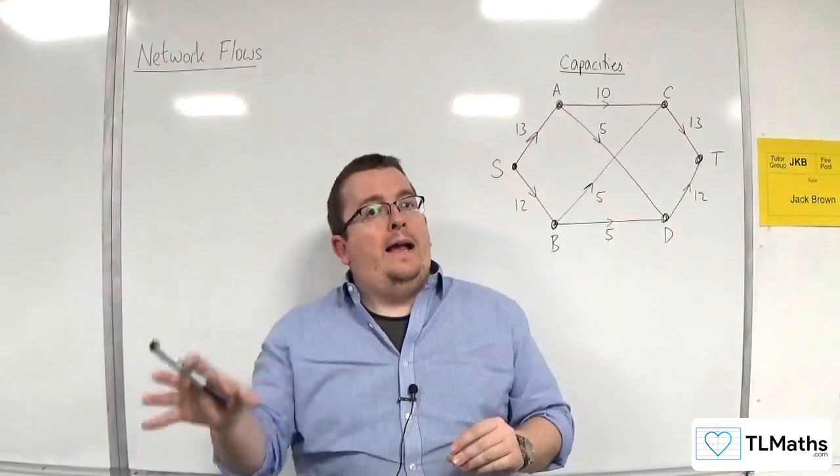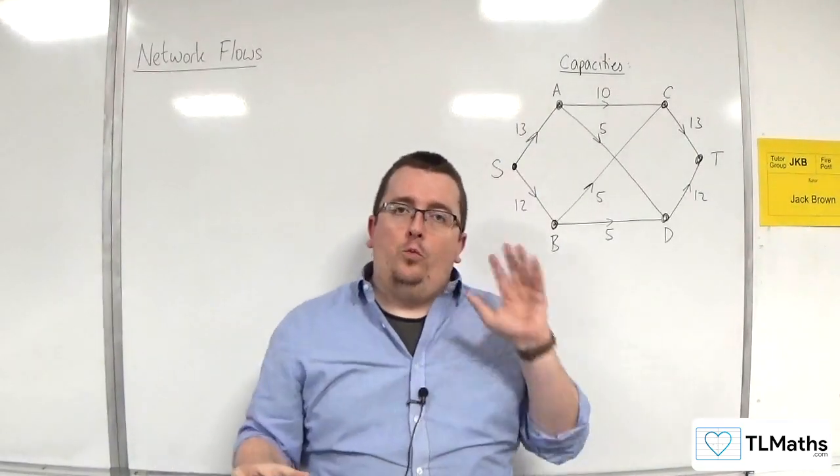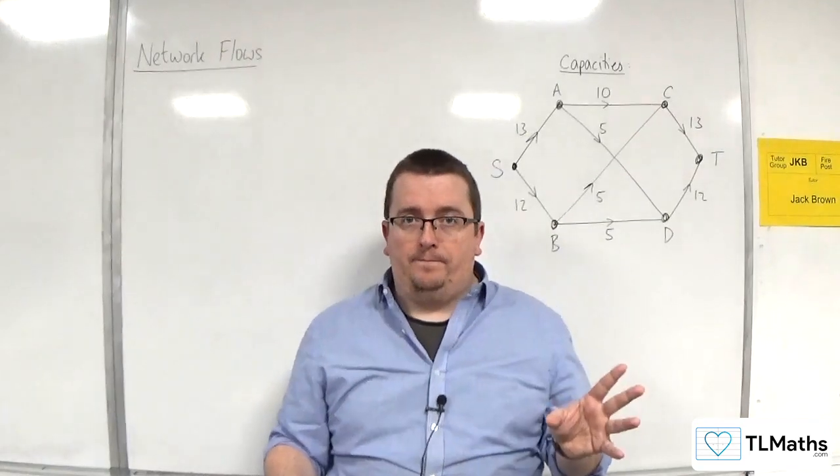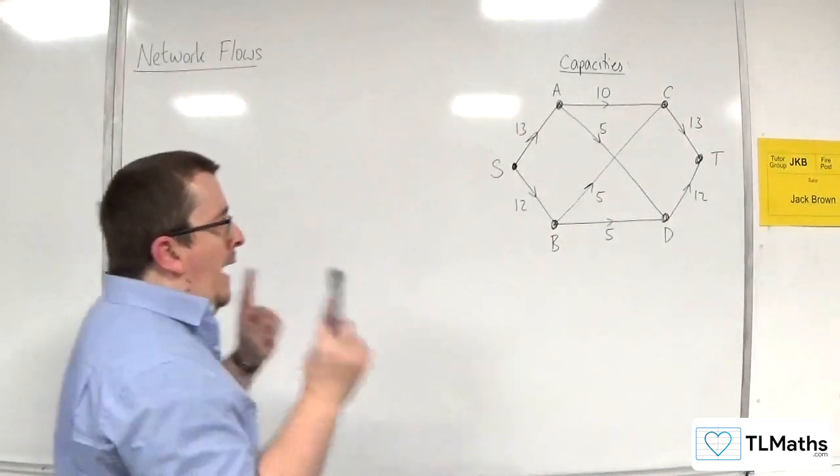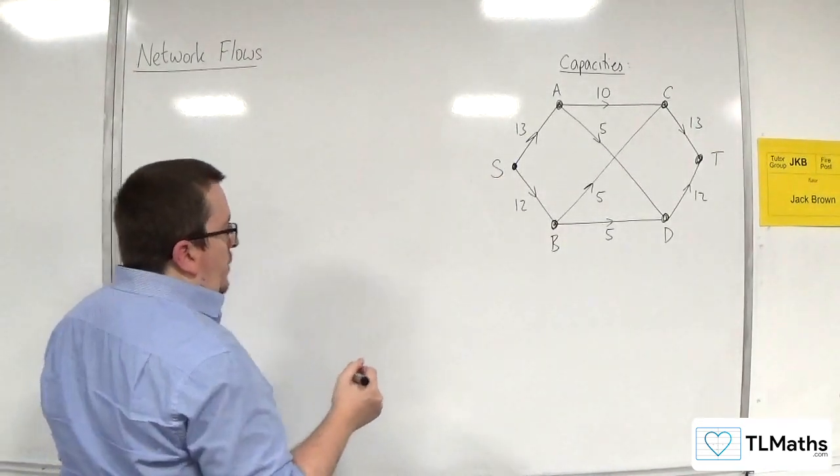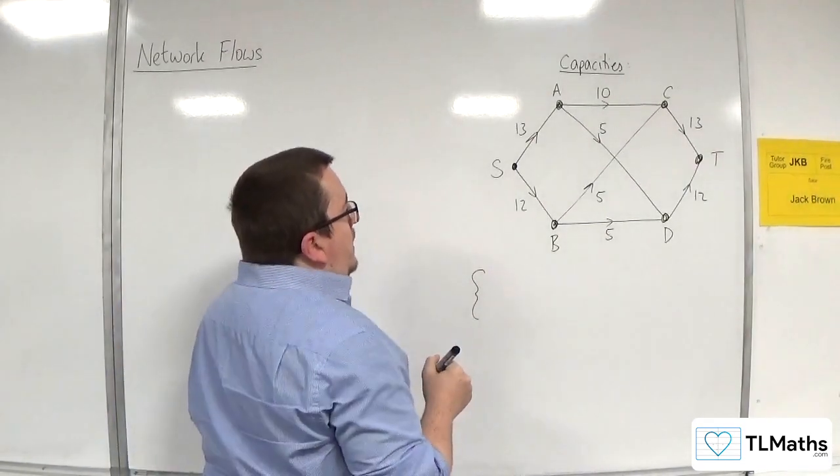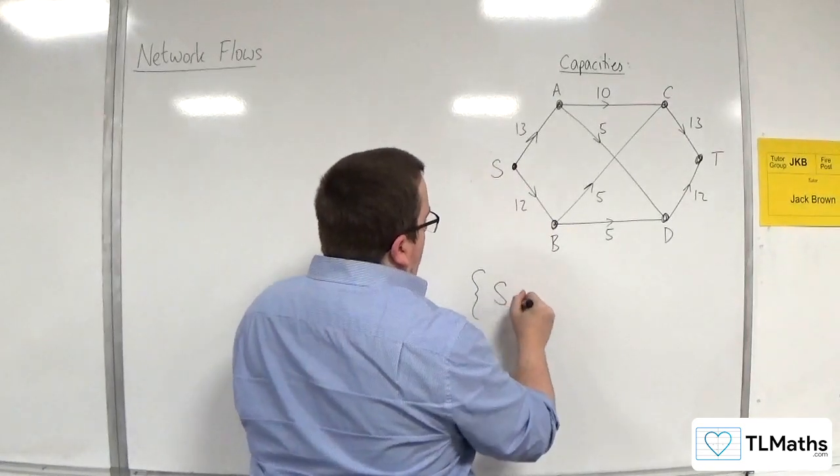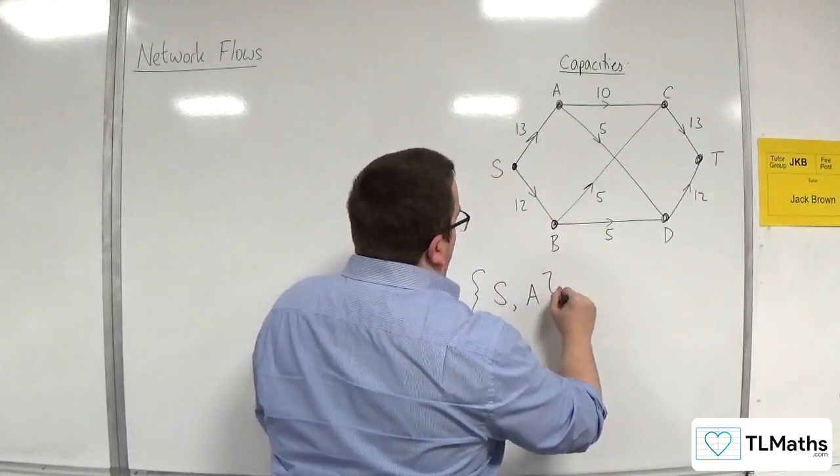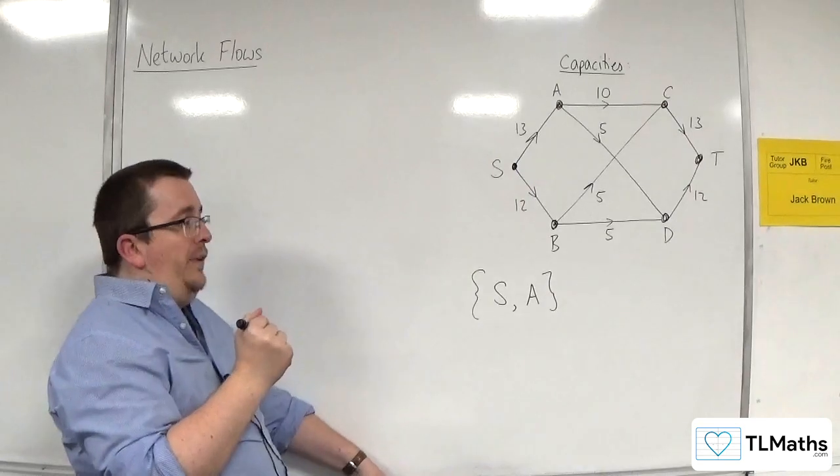One group has the source and one group has the sink. So an example of this and the way that we write it is we use curly brackets and we could have S and A, for example, in one set.